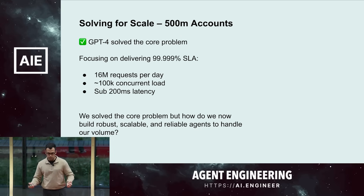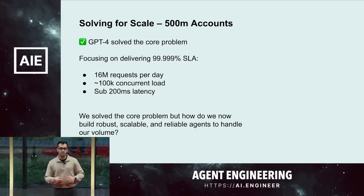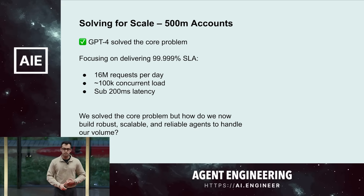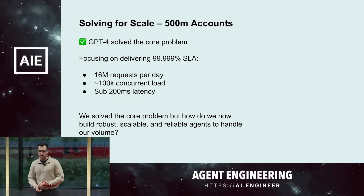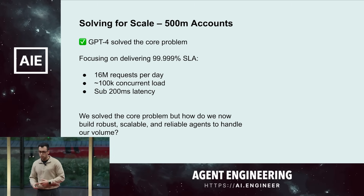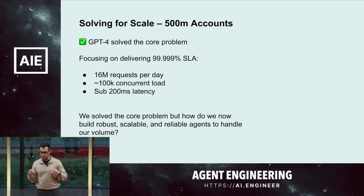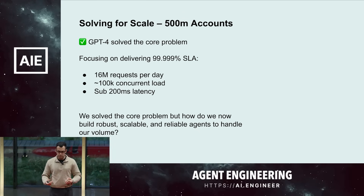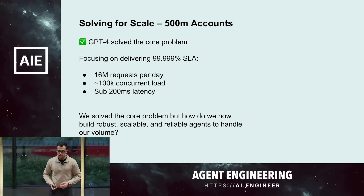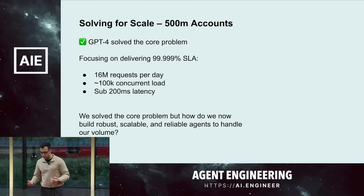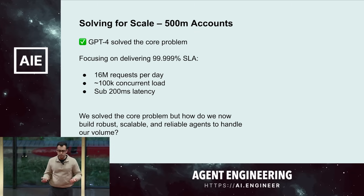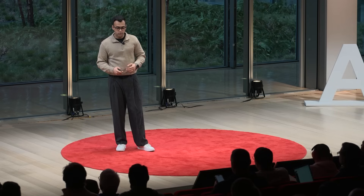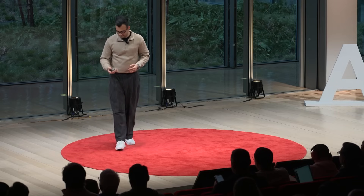Some of the ballpark figures we came up with: we were going to be making at least 16 million requests per day, we'd have at least 100,000 concurrent load, and we needed minimal latency to handle this real-time agentic workflow — sub-200 milliseconds. So the natural next step was: do we buy more GPUs? Do we host our own model?